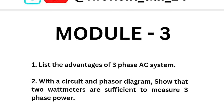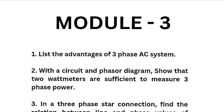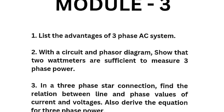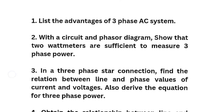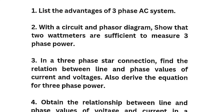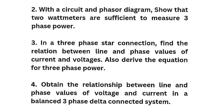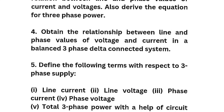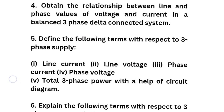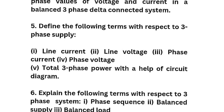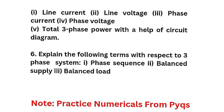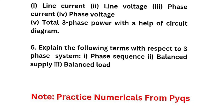Module 3: list the advantages of a three-phase AC system over a single-phase AC system. With a circuit and phasor diagram, show that two watt meters are sufficient to measure three-phase power. In a three-phase star connection, find the relation between line and phase values of current and voltage, and derive the equation for three-phase power. Obtain the relationship between line and phase values of voltage and current in a balanced three-phase delta connected system. Define line current, line voltage, phase current, phase voltage, and total three-phase power with a circuit diagram. Explain phase sequence, balanced supply, and balanced load.